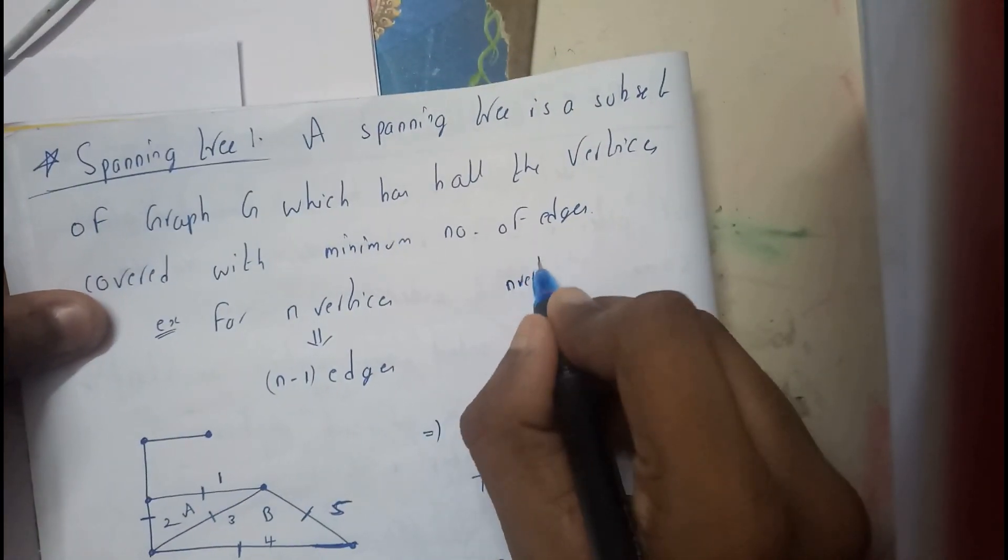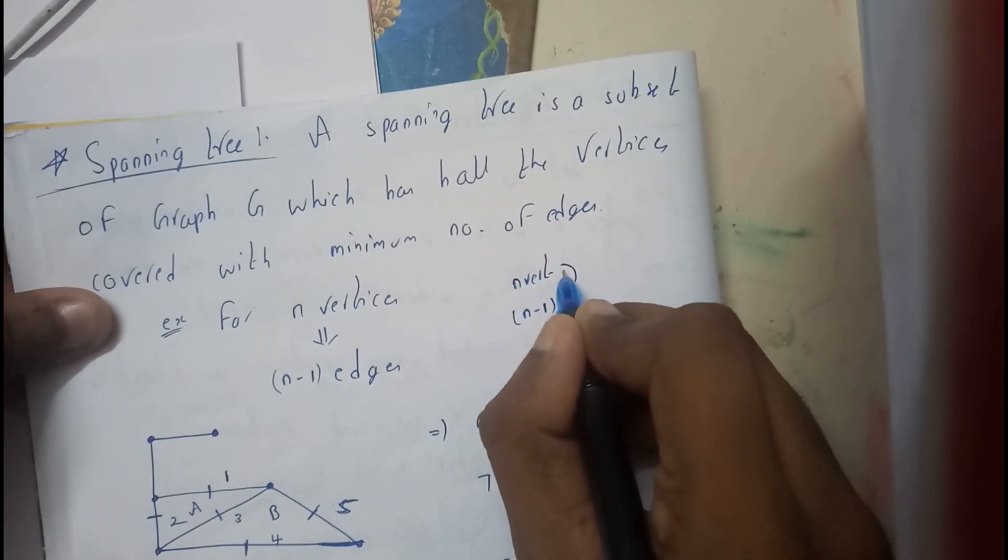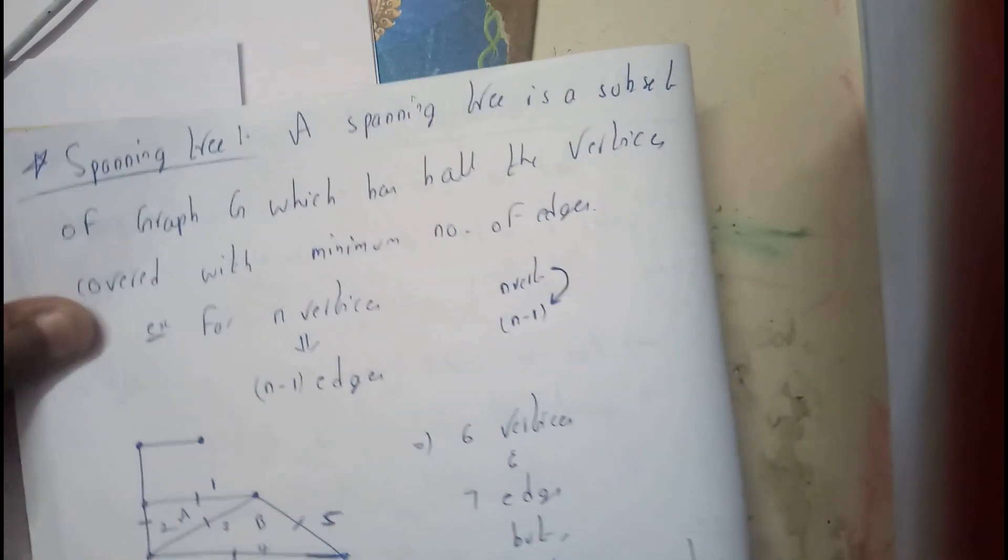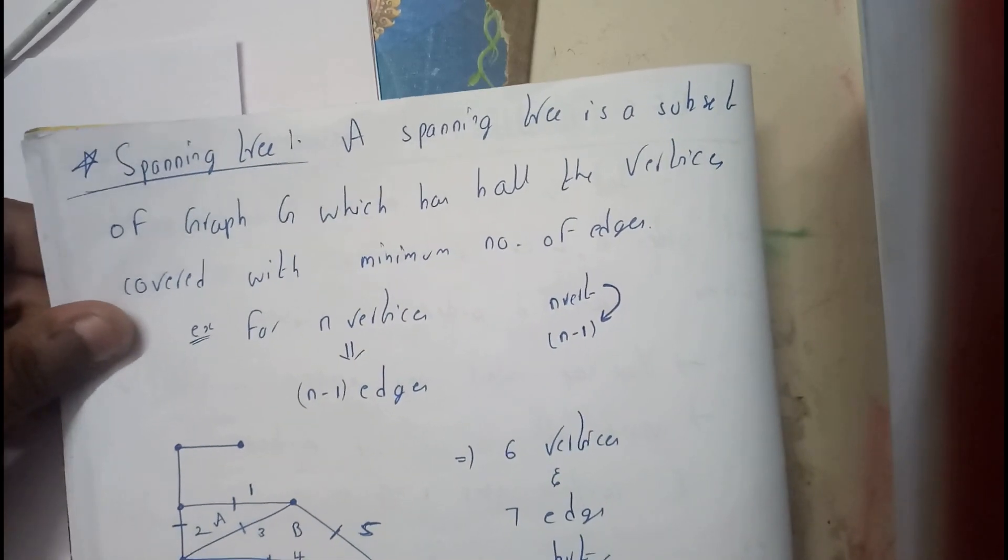For n vertices, the least number of edges should be n-1. I didn't know this previously, once I went through this I got to know about it. So for n vertices you should have n-1, this is the least number of edges for a tree.